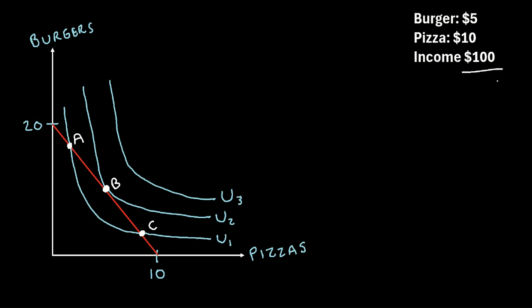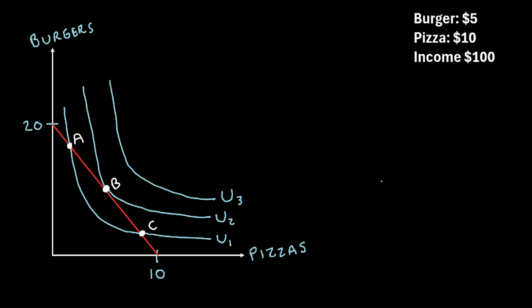But you are constrained by your total income. So if burgers cost $5 each and you spent all of your income of $100 just on burgers, you could buy 20 burgers. We can draw a budget line where the y-axis starts at 20. Or if you spent all of your income on pizza — remember pizzas are $10 each — you could buy 10 pizzas, so the x-intercept is 10 pizzas.